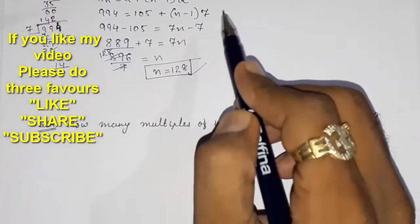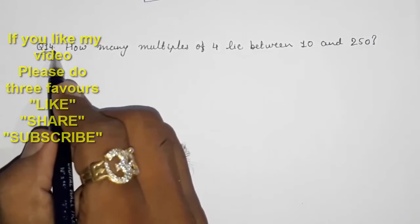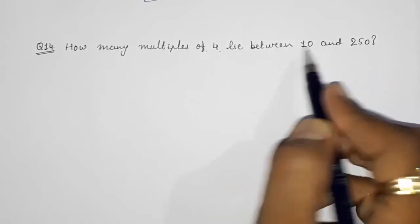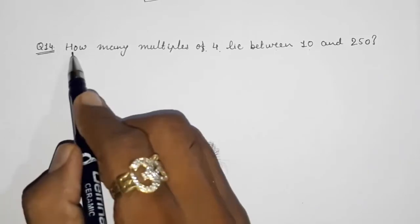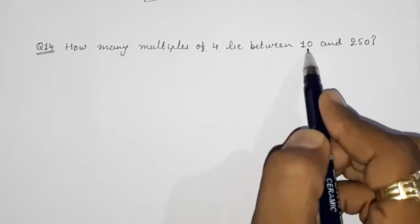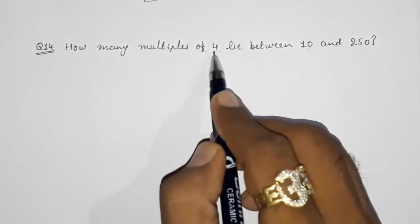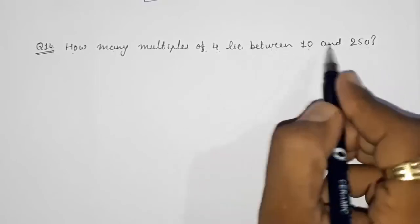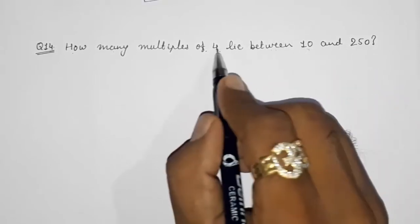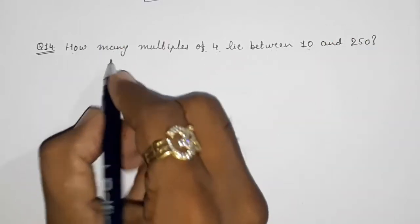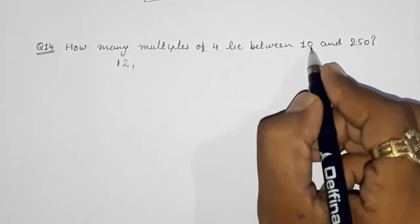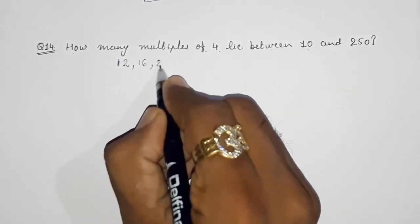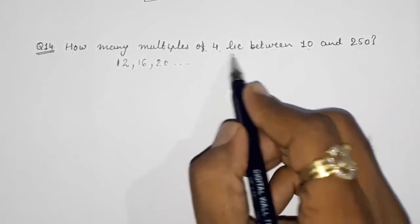Moving towards the next question, question number 14: How many multiples of 4 lie between 10 and 250? So between 10 and 250, multiples of 4. Directly we come to know that we don't have to take this 10 and this 250 because they said between. What will be our first number that is multiple of 4 after 10? We know that is 12. After 12, 16, then 20, and before 250 which number is divisible by 4?